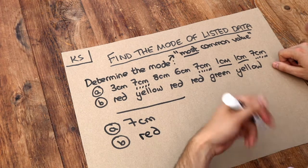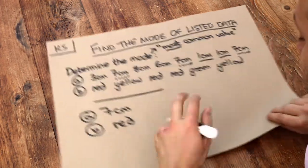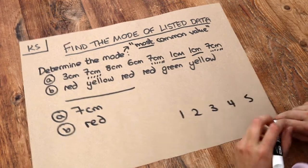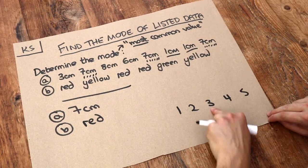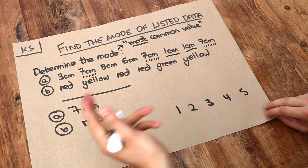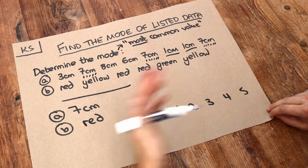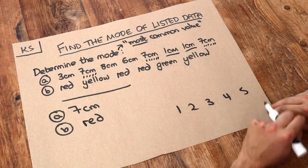And one final note is that sometimes listed data doesn't have a mode. So if I had for example the list one, two, three, four, five, we could find the median of this data, which is three, the middle value. We could find the mean of this data, we could add them up and divide by five, which would also be three. But there is no mode because there's no most common value.